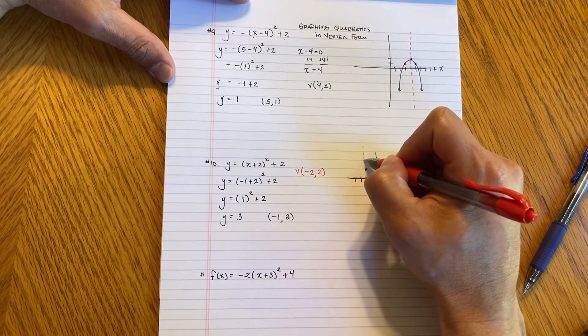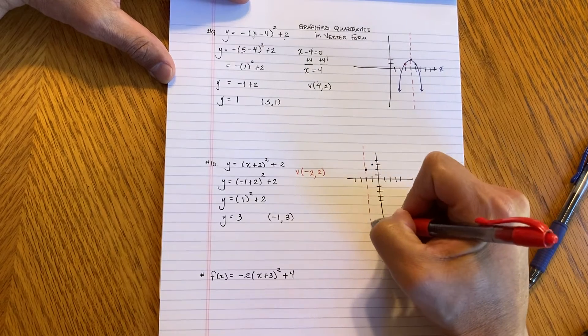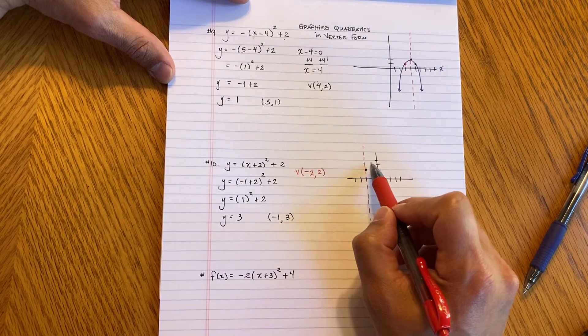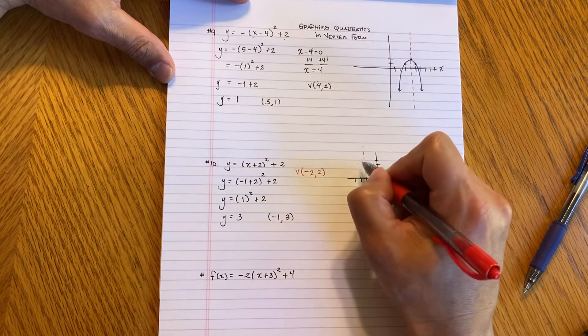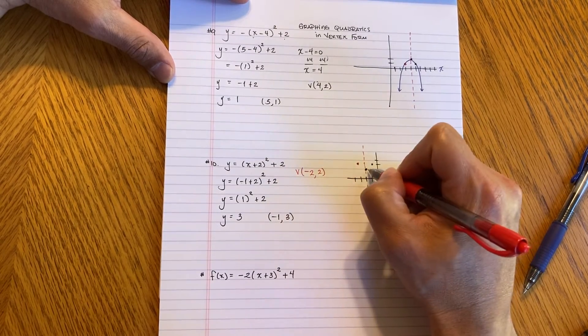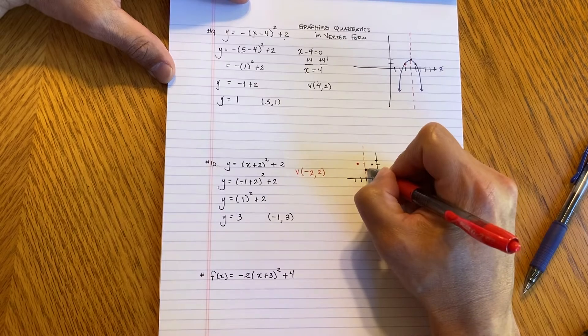Now remember, here's a line of symmetry. It looks like it's one unit to the right of the line. I'm going to go one unit to the left of the line. So right about here. And then let's go ahead and just graph it.